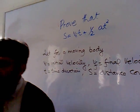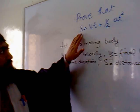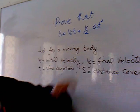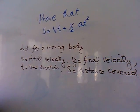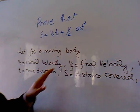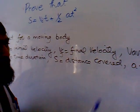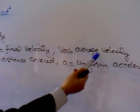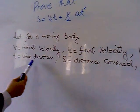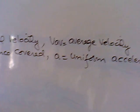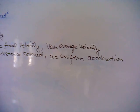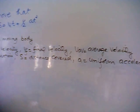This is the second equation of kinematics. We have to prove s = vit + (1/2)at². For a moving body, we suppose vi is initial velocity, vf is final velocity, v_average is average velocity, t is time duration, s is distance covered, and a is uniform acceleration.